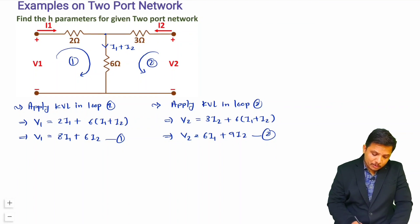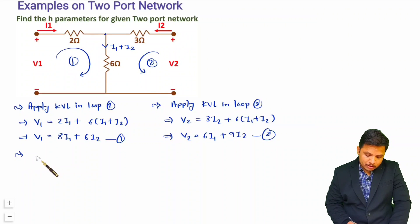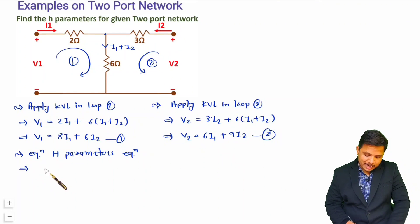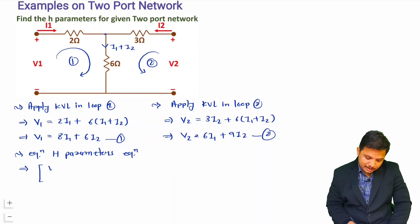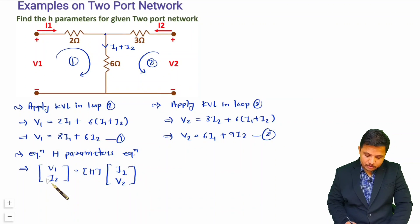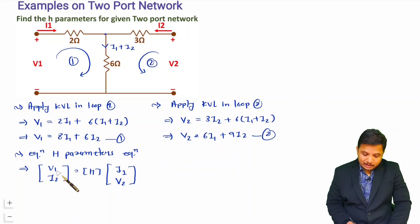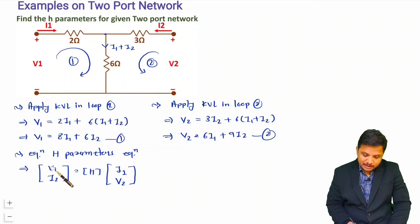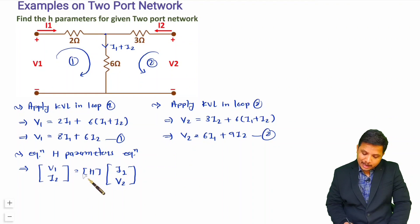Now we want to calculate h parameters. You should know the basic equations of h parameters: V1 and i2 are expressed in terms of i1 and V2. So one equation expresses V1 based on i1 and V2, and the second equation expresses i2 again based on i1 and V2. Once you have these two equations you can directly read off the h parameters.